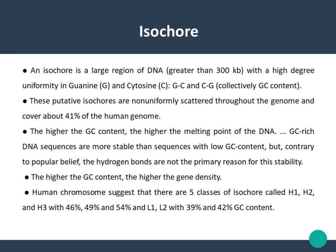The genomes of almost all eukaryotes display evidence of a level of organization called isochore, intermediate between that of genes and chromosomes. The working definition of an isochore is a long region of homogeneous base composition, which has two operative parts: first, the genomic sequences of isochores are in excess of 1 million base pairs in length; second, the GC content of an isochore is relatively uniform throughout, although it differs significantly as the transition is made from one isochore to the next.